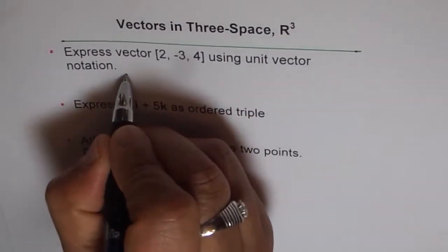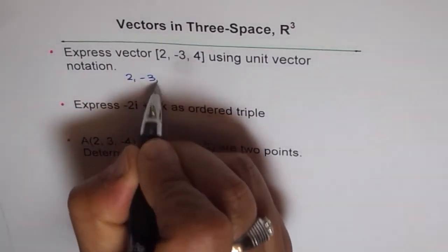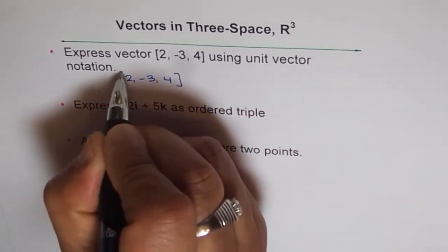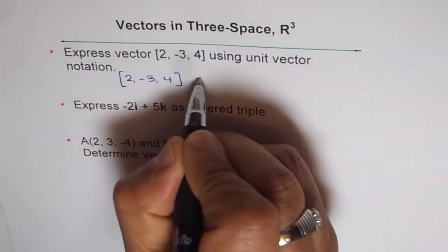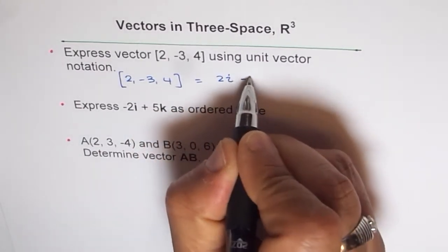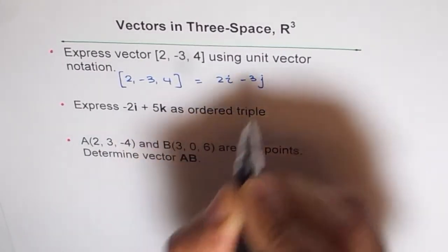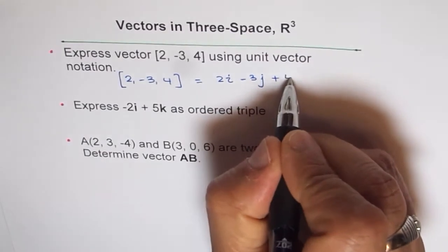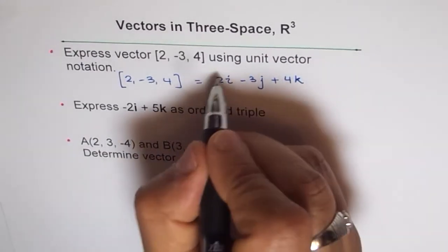So I can write this vector [2, -3, 4], which is in ordered triple, as equal to 2 times i minus 3 times j plus 4 times k.